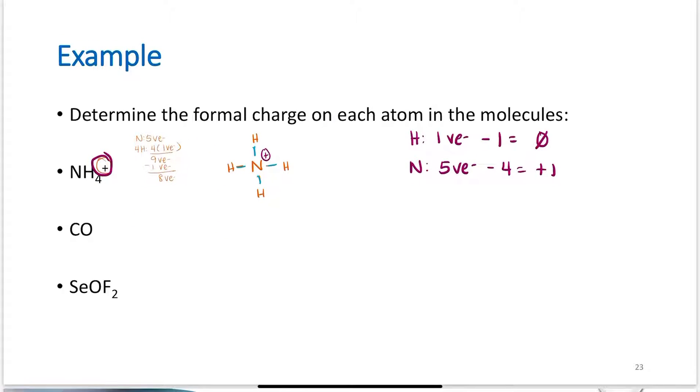Okay, CO. Carbon: 4 valence electrons. Oxygen: 6 valence electrons. Overall, 10 valence electrons. Carbon to oxygen. 1 bond to connect them, and then 4, 6, 8, and 10. Oxygen has an octet. Carbon does not. Carbon wants an octet.